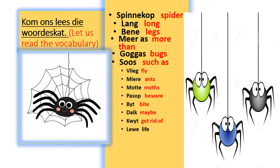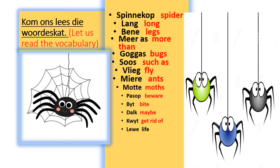Soos — such as. Vlieg — fly. Miere — ants. Motte — moths. Pasop — beware.